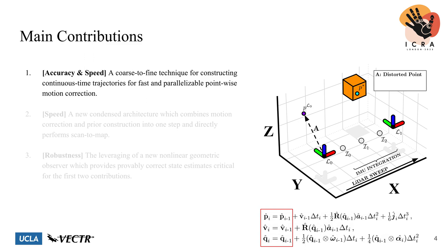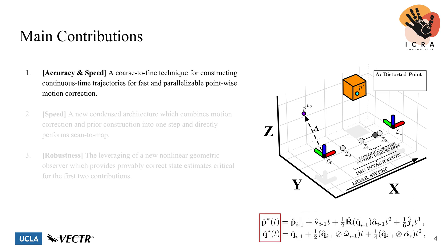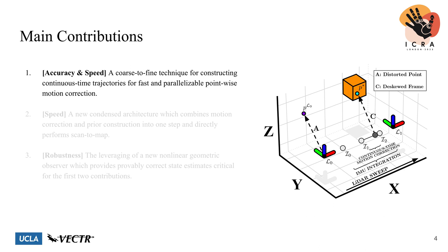Here we use a constant linear jerk and a constant angular acceleration motion model. From these discrete positions, we can construct continuous time trajectories using the initial conditions from each node up to the point's time. By doing this, these analytical equations are parameterized solely by the timestamp of each point, and therefore this process is extremely parallelizable. This is important because point clouds typically contain tens or hundreds of thousands of points per cloud. Once we get the final de-skewing frame, as indicated by C, we can construct a relative transform between the initial position L0 and the de-skewing frame so that the point is finally corrected with respect to L0.